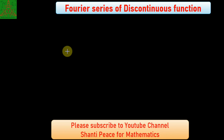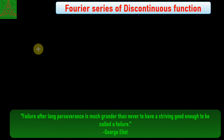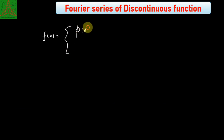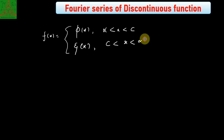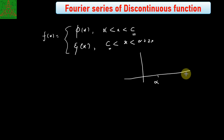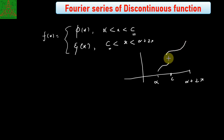Welcome to Santi Peaceful Mechanics. In this video we will discuss functions having a point of discontinuity — how to calculate the Fourier series of functions having a point of discontinuity. For example, if you have a function f(x) equal to φ(x) in the interval α to c, and ξ(x) from c to α+2π, then this function is a 2π-periodic function with a discontinuity at the point c.